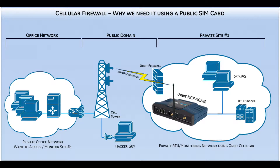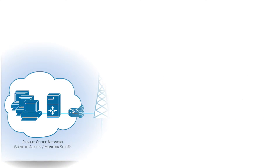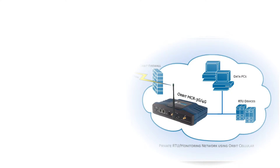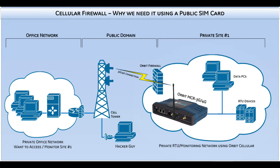One of the primary features inside an Orbit MCR 3G or 4G is its connectivity to the public cellular network. Since the cellular interface is connected on the public domain, this gives the user access from a remote location. This makes managing devices and polling networks very easy, as the private office on the left can monitor the RTU devices on the right. However, this also allows anyone else on the public domain the ability to communicate with the Orbit if they obtain the Orbit's cellular IP address.